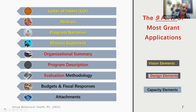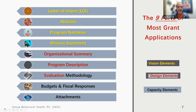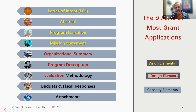Almost any grant application has vision components — things like your letter of intent, which says 'we want your money and we're going to do something good with it.' The abstract, which is written last and has a paragraph about what you're going to do. And your program narrative — this is the story, what most people think about when they say 'I'm going to write a grant.'